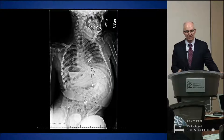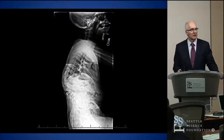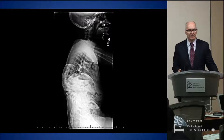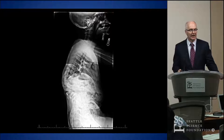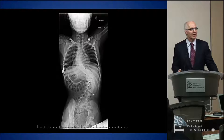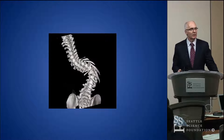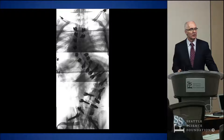This is a GMFCS5 CP child with a 140-degree curve. On the lateral and AP of the spine at the apex, the trajectory for the screw coming in at that level would actually have to go through the abdomen in order to get into the pedicle. With traction, it comes all the way down to about 90 degrees. It's this kind of deformity that is a particular challenge.